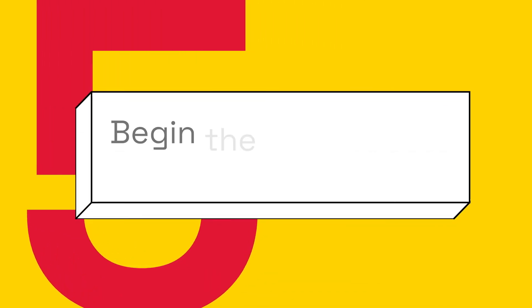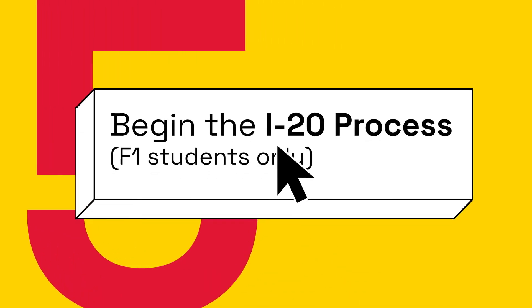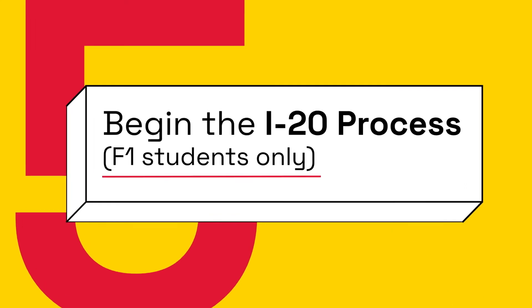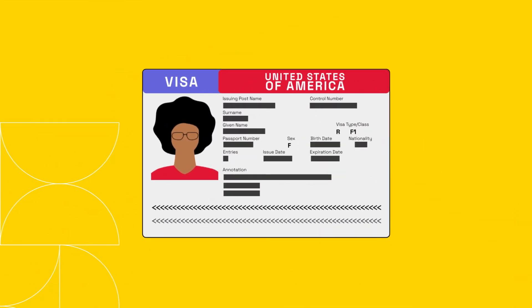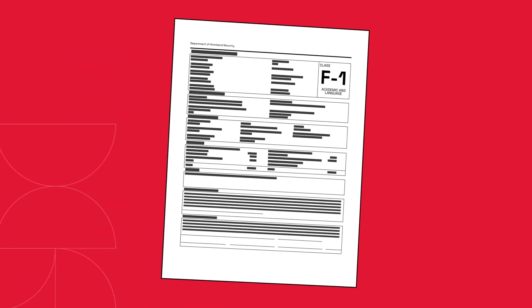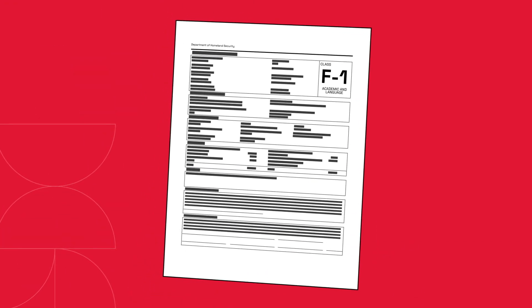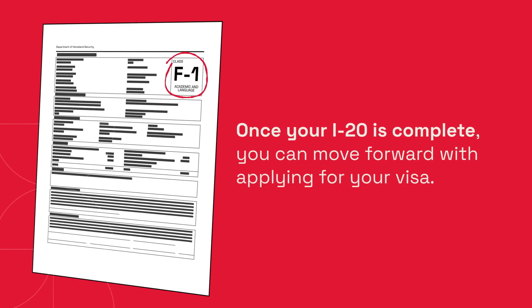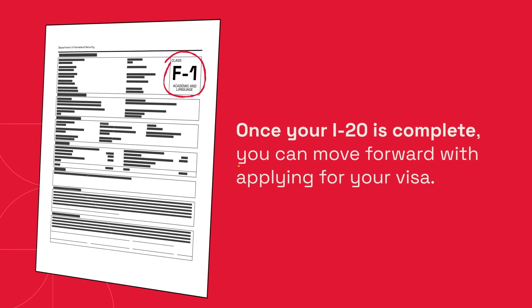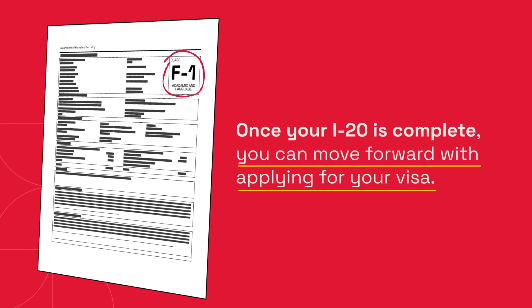Step 5: Begin the I-20 process — F-1 students only. If you'll be studying under an F-1 student visa, we also recommend starting the I-20 process now. The International Student and Scholar Services will work with you to submit all the required documents. Once your I-20 is complete, you can move forward with applying for your visa.